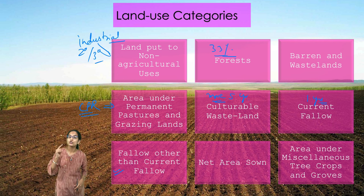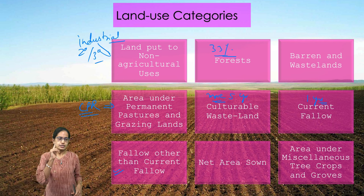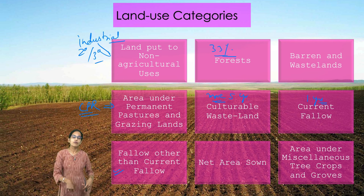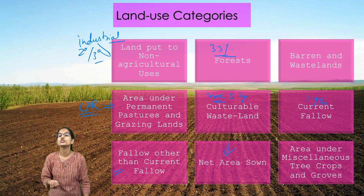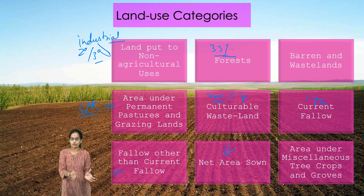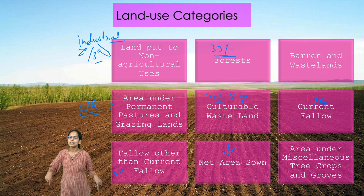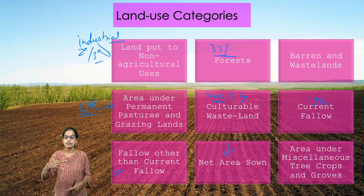Next is net sown area — a very important demarcation of how much crop is actually sown and harvested. The physical extent of land on which crops are sown and harvested gives you the net sown area. Gross sown area is the total crop cultivated from that net sown area. From the same parcel of land, if there are two crops in a season, they are counted twice, but the area is counted once.